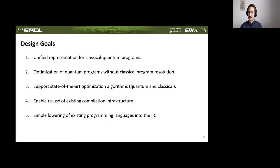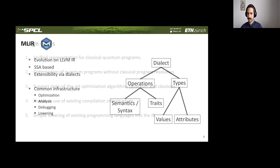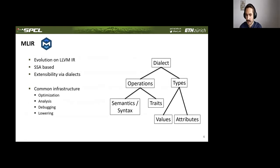So with that in mind, a quantum intermediate representation for application-scale computing should provide a unified representation for classical and quantum program parts, enable optimization on quantum programs on this high-level description before classical program resolution, support state-of-the-art optimization algorithms both classical and quantum, and wherever possible, reuse existing compilation infrastructure. And finally, it should provide a simple mechanism to lower existing program languages to this IR.